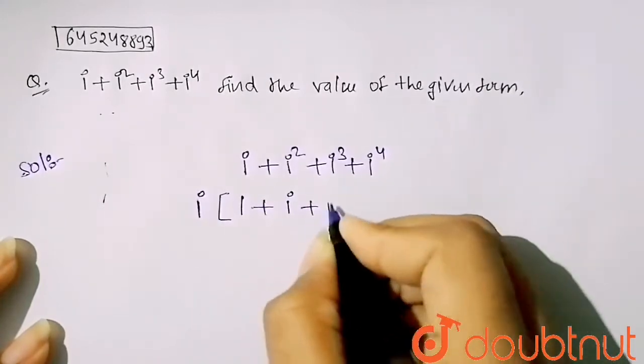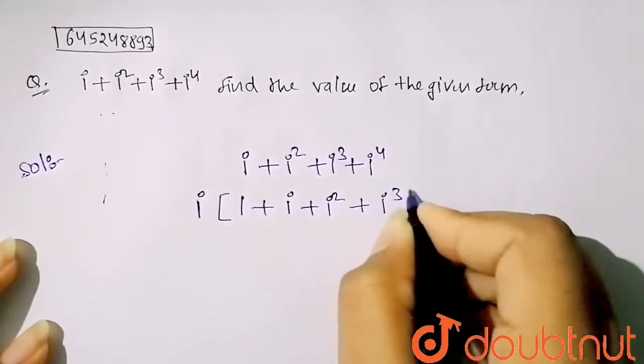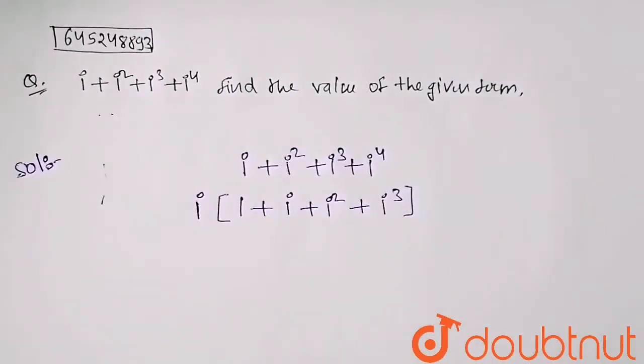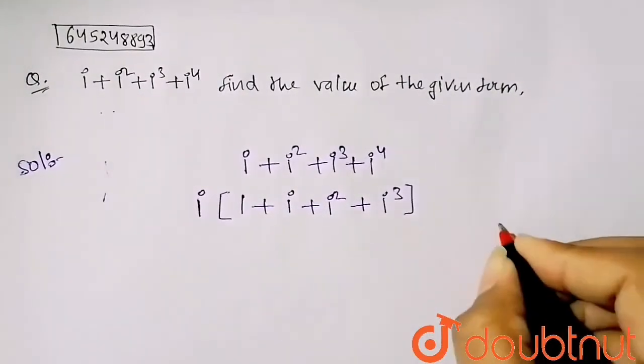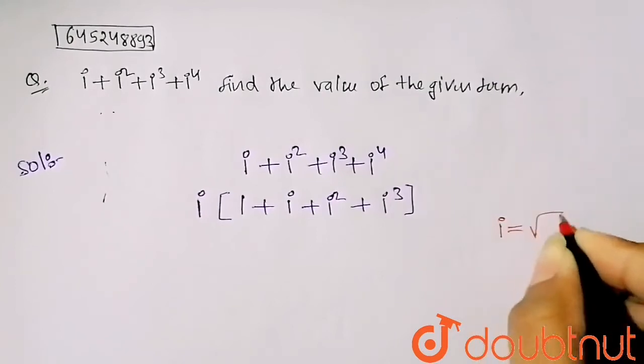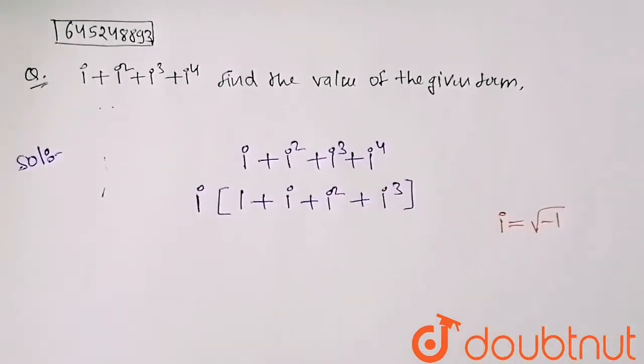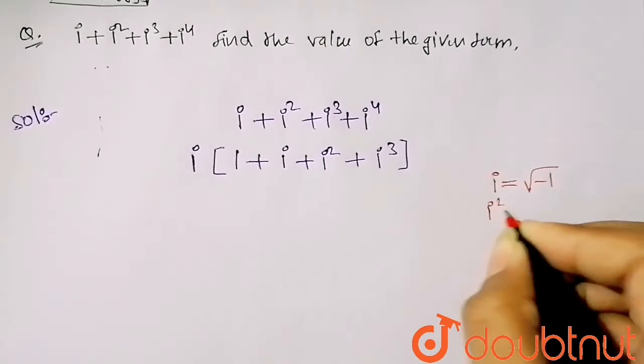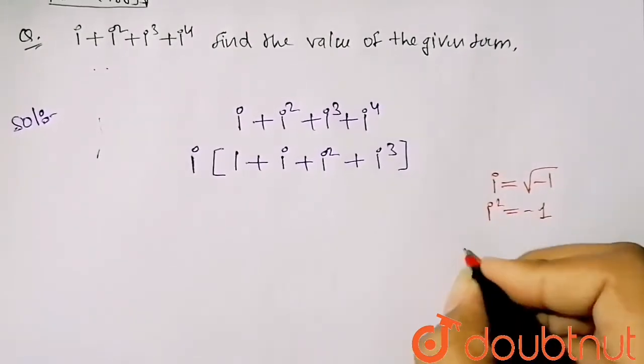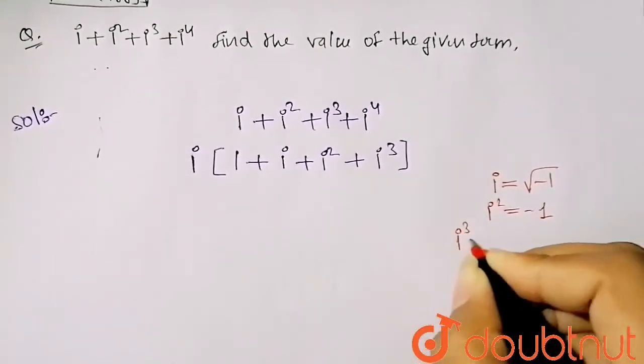Now here we know that my iota value is equals to root minus 1, and my iota square is equals to minus 1. So my iota cube will be what? Iota cube can be written as iota into iota square.